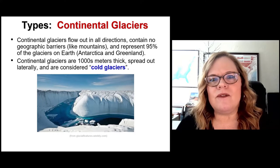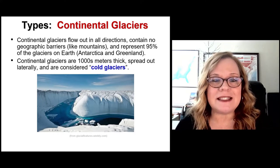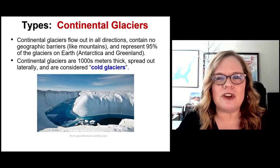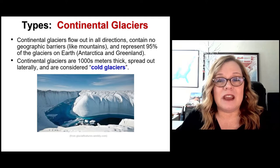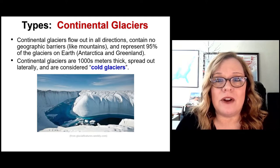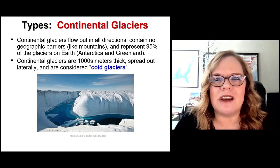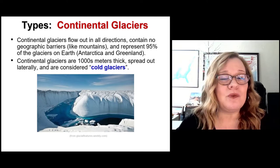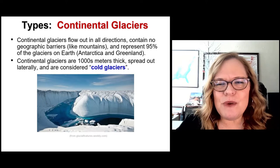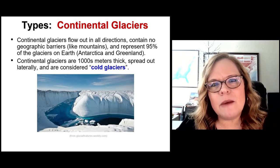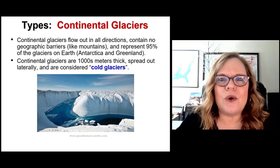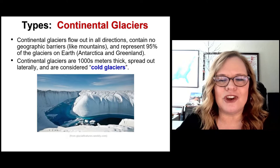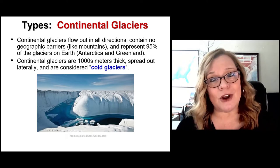During the last ice age — the Pleistocene epoch — we had continental glaciers that invaded parts of the United States from two different ice sheets: one from Alaska and one from Canada. Continental glaciers can be thousands of meters thick, and in the last ice age they were substantially thicker. As continental glaciers consume sea water and sea ice you can see how that could change sea level — and as they melt, sea level rises, leading to transgressions and regressions. We also call continental glaciers cold glaciers because they stay below the freezing point for a majority of the year.